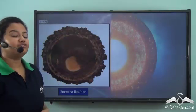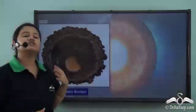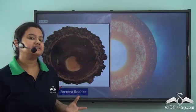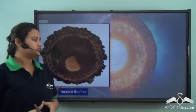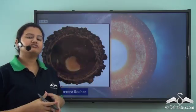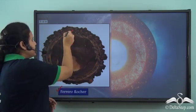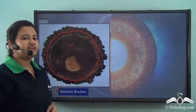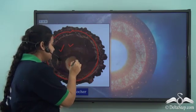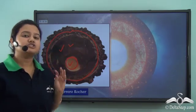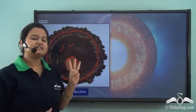Here we have a picture of a delicious chocolate — Ferrero Rocher. This chocolate is not only amazing to taste but it also has an intriguing concept. Once you bite or cut into this chocolate you will find that it is composed of three distinct layers: the outer layer is hardened chocolate filled with nuts, the middle layer is melted hazelnut chocolate, and the innermost part is a solid hazelnut.